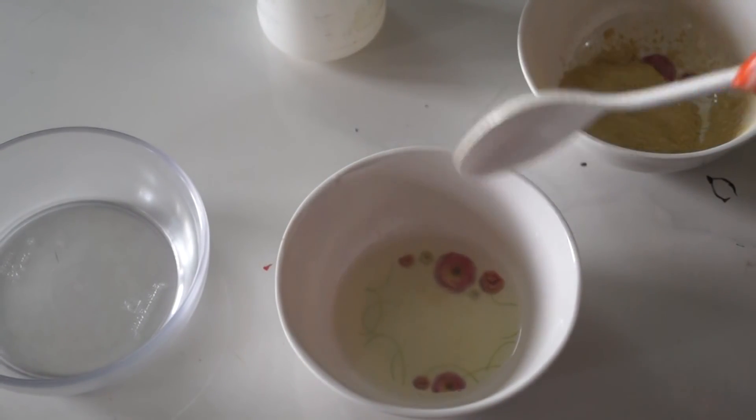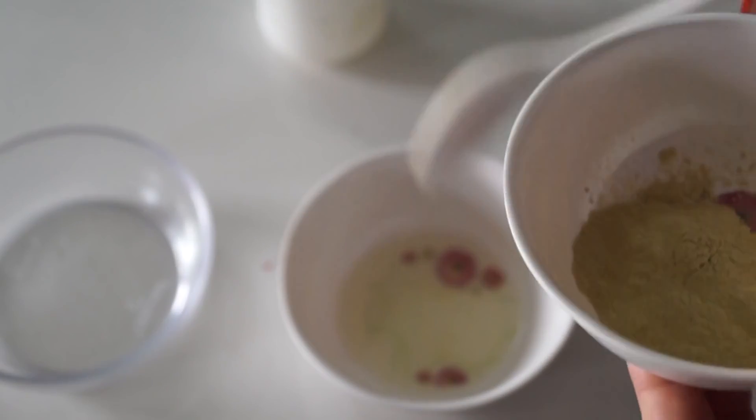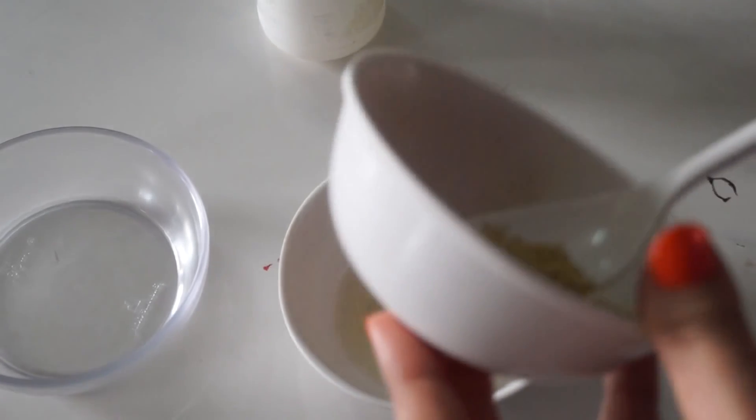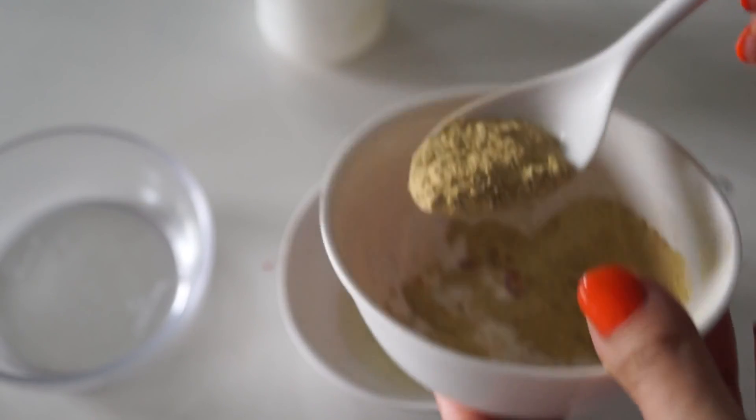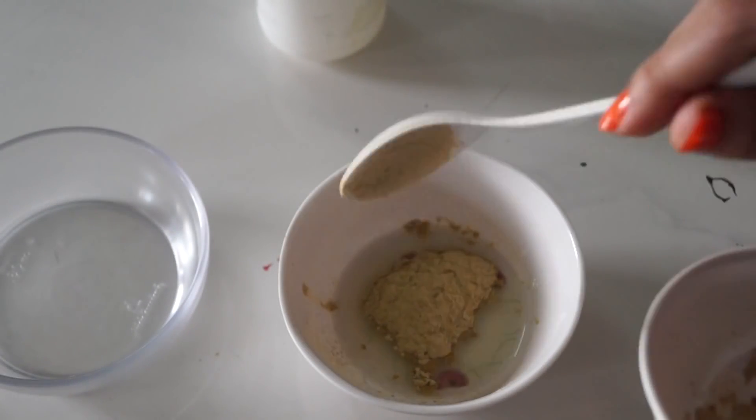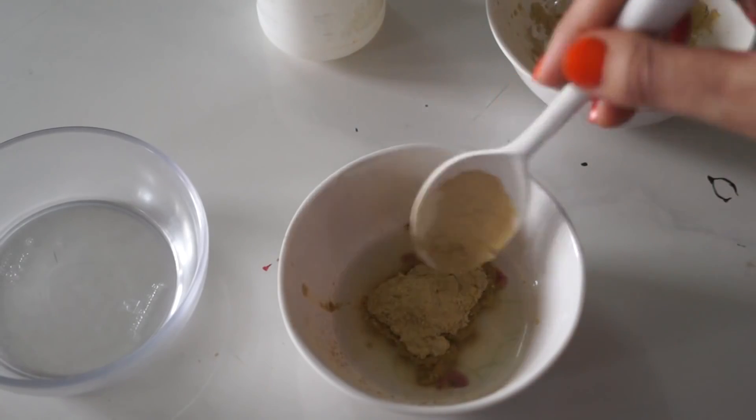Now what I am going to add is sandalwood powder. So I will add around one tablespoon of sandalwood powder. That is a small tablespoon of sandalwood powder. That much. Now mix it well.